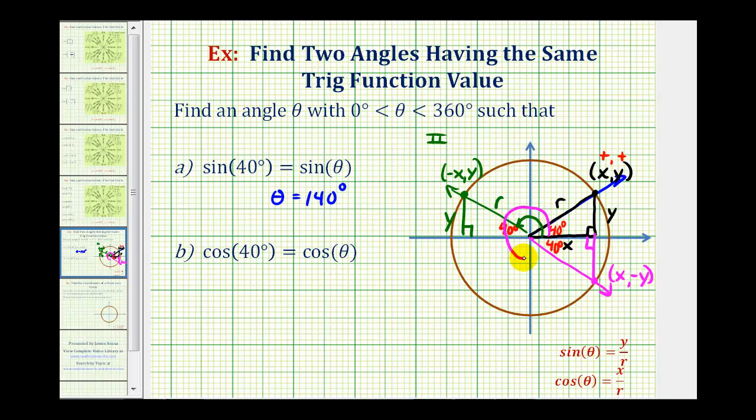270 degrees plus 50 degrees, which would be 320 degrees. So cosine 40 degrees equals cosine 320 degrees.